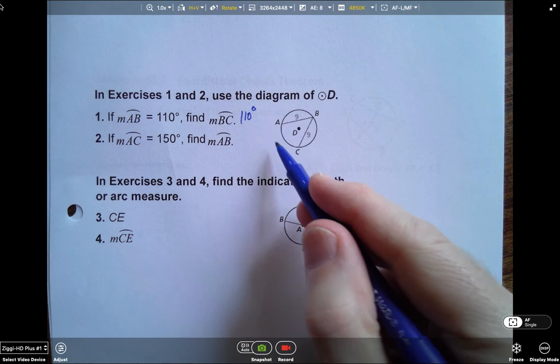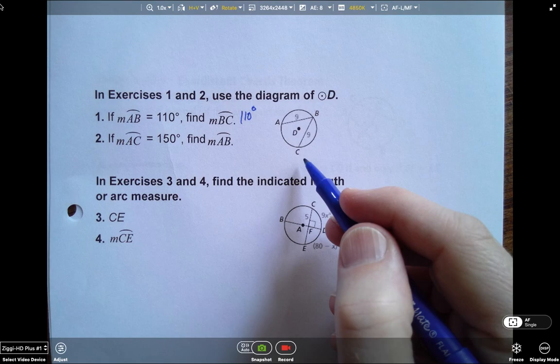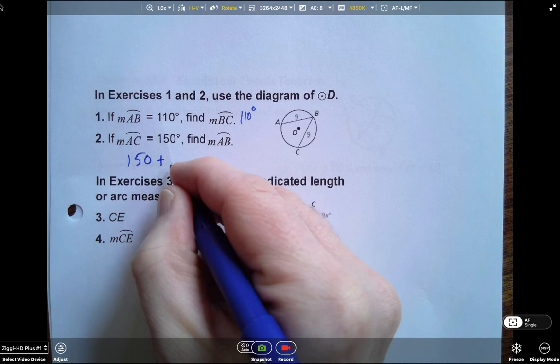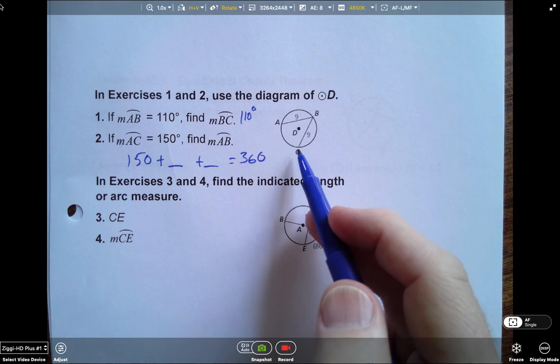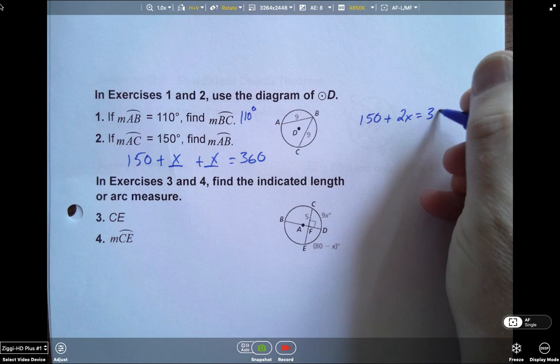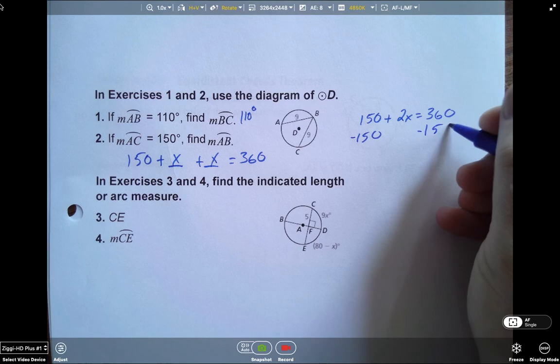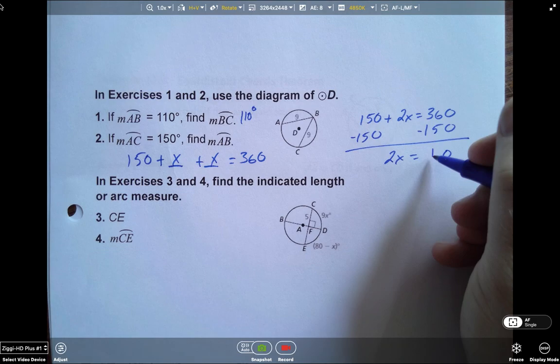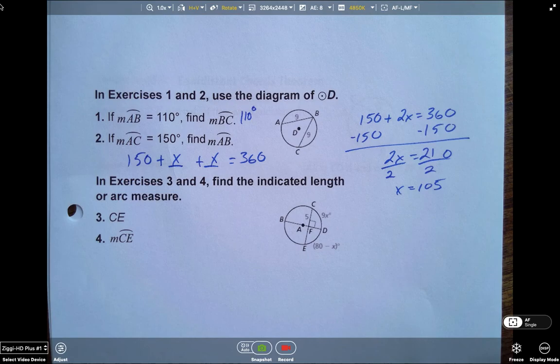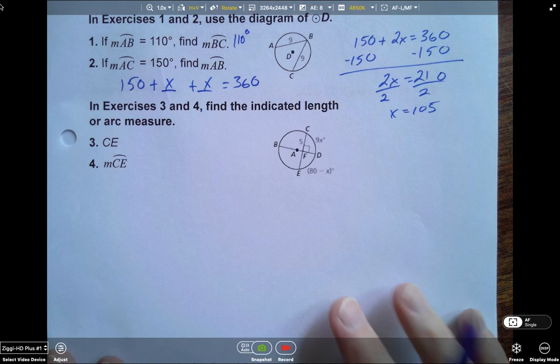And number 2, we're going to forget what we did for number 1. We're going to redo this. And it says AC is 150 degrees. So if I think of this as 150 degrees, I've got these two arcs to get to my whole circle. The measure of a whole circle is 360. So 150 plus something plus something has to equal 360. But what do I know about these two arcs? They are the same. So I can put X and X. Or 150 plus 2X equals 360. So I subtract 150 from both sides. And I get 2X equals 210. Divide by 2, X equals 105. So the measure of AB is 105 degrees.